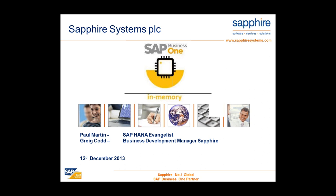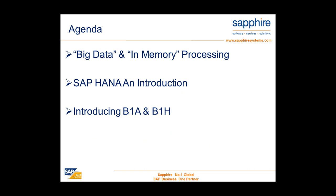Today's webinar is really to look at three key areas: first of all, to make sense of what big data is and in-memory processing; then to understand some of the challenges that presents to a business and what SAP is doing to help through their product HANA. We'll get into more detail on that as an introduction, and then look at features and functions of the HANA solution in action, running in SAP's small to medium sized enterprise solution, SAP Business One — the solution that Sapphire mainly focuses its sales, implementation and support efforts on.